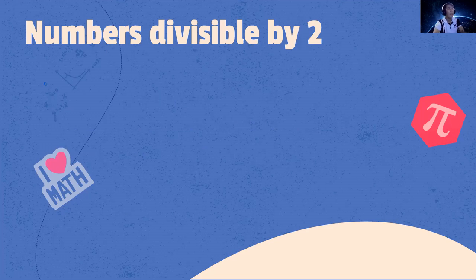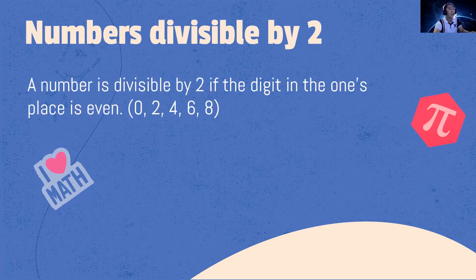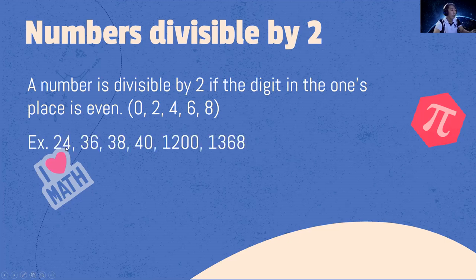Let's identify if numbers are divisible by 2. A number is divisible by 2 if the digit in the 1's place is even — that means the number ends with 0, 2, 4, 6, and 8. Examples: 24, 36, 38, 40, 1,200, 1,368.